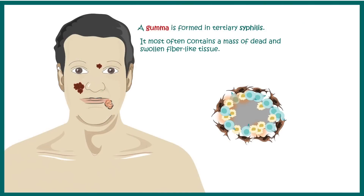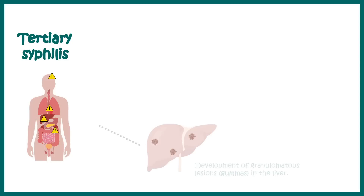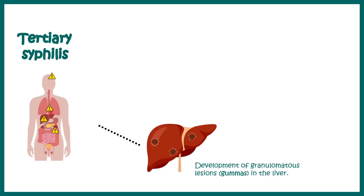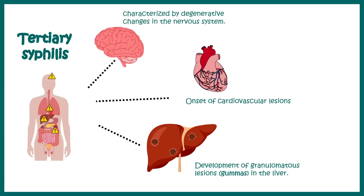In tertiary syphilis, a gumma is formed — even years after infection. A gumma is basically a clump of dead immune cells: immune cells and fibroblasts attached together forming a clump with a necrotic core. This gumma appears on the skin, liver, or even in the bones. Tertiary syphilis can involve granulomatous lesions in the liver, bone, or skin; cardiovascular lesions known as cardiovascular syphilis; neuropathy known as neurosyphilis; and several other manifestations affecting the testes and intestines.